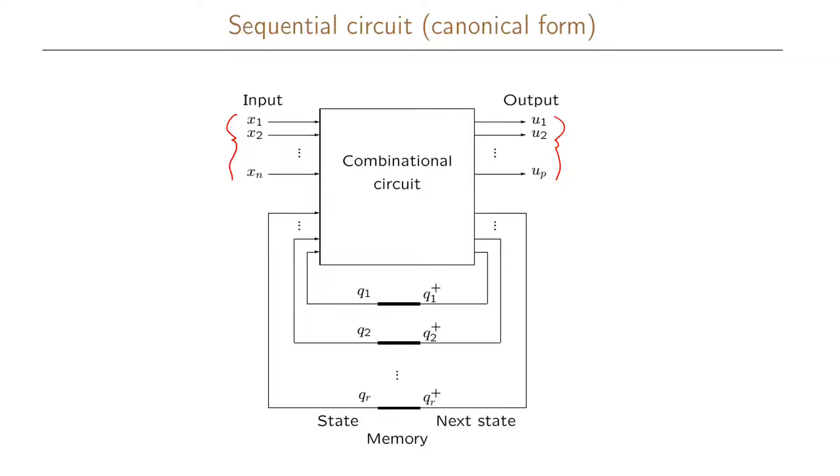The difference here now is that we short-circuit what we previously had as a d element. So what we wrote as a delta here before, we now remove completely. We just connect q1 plus to q1, q2 plus to q2, and so on up to qr plus to qr.